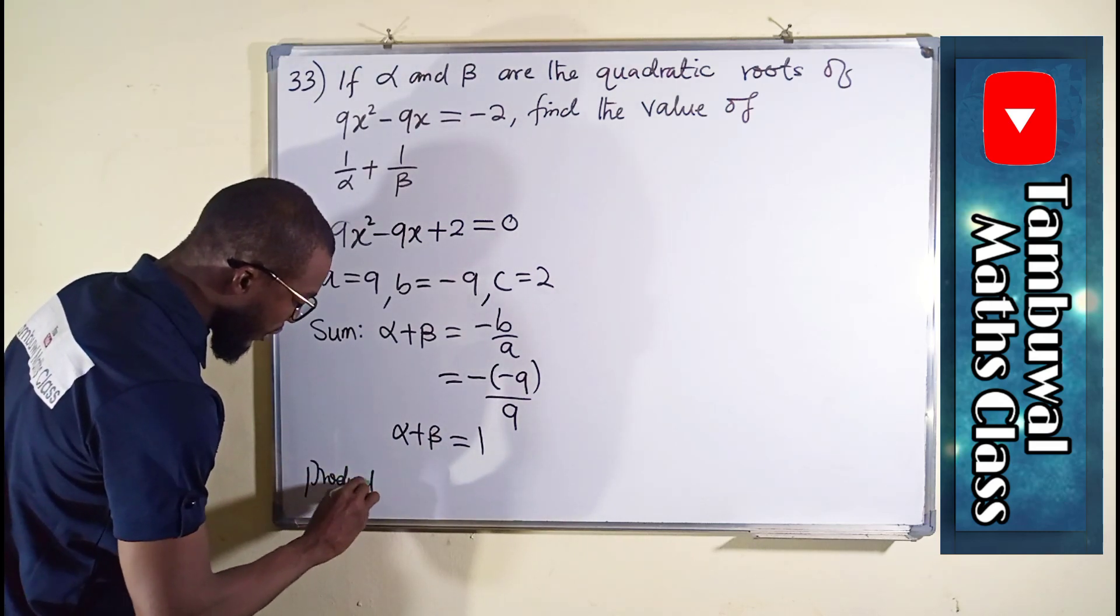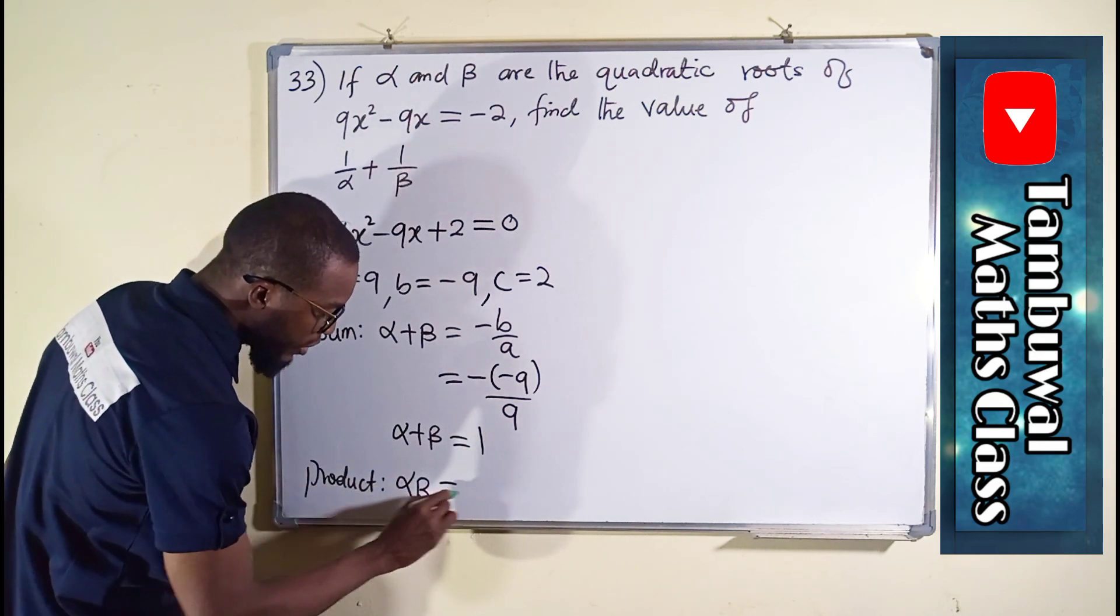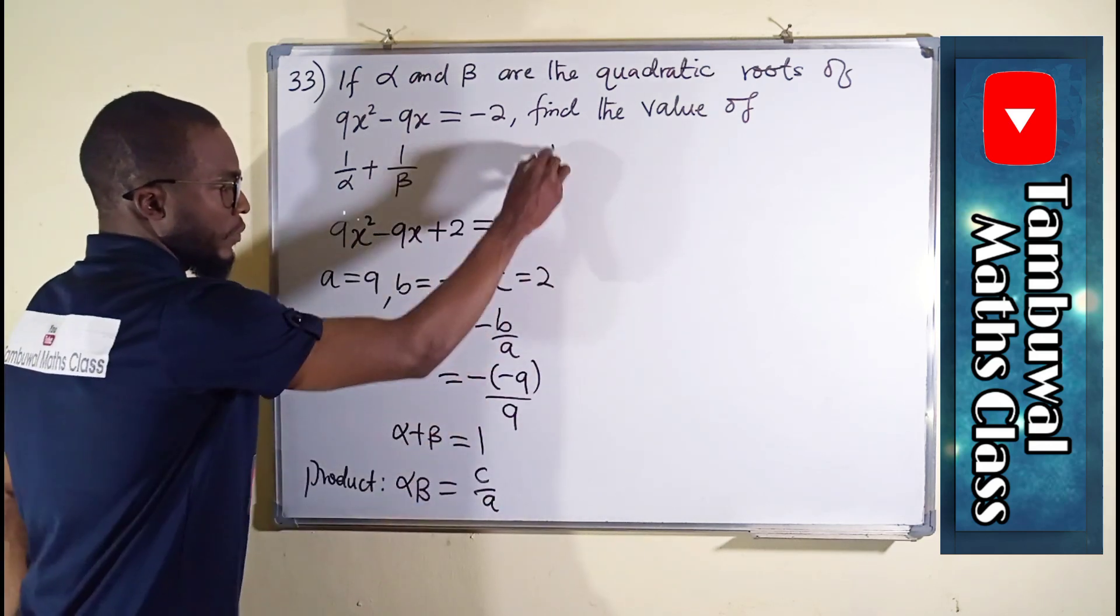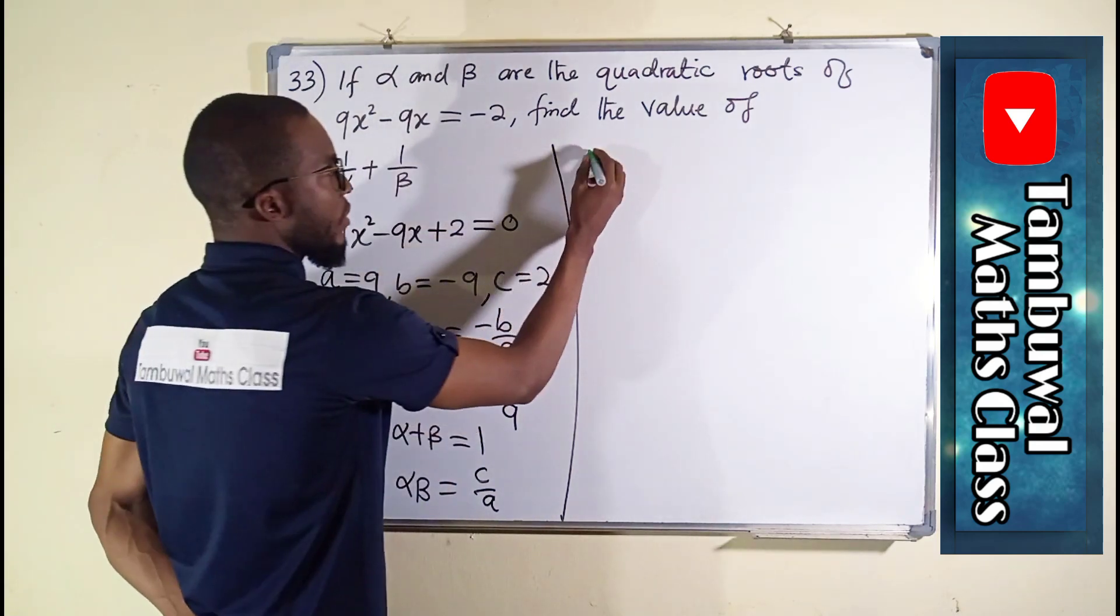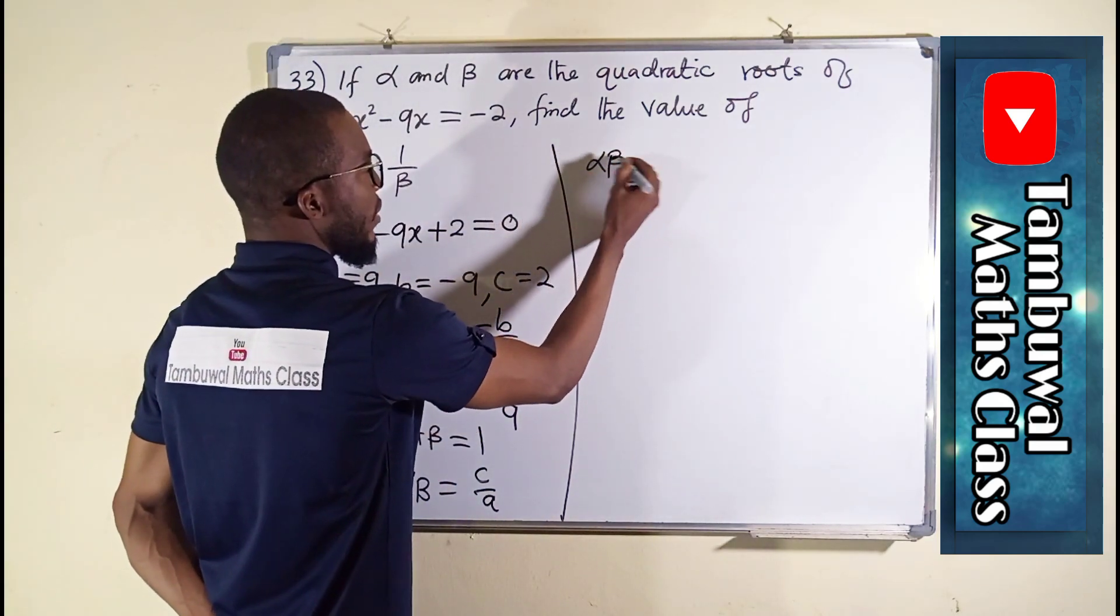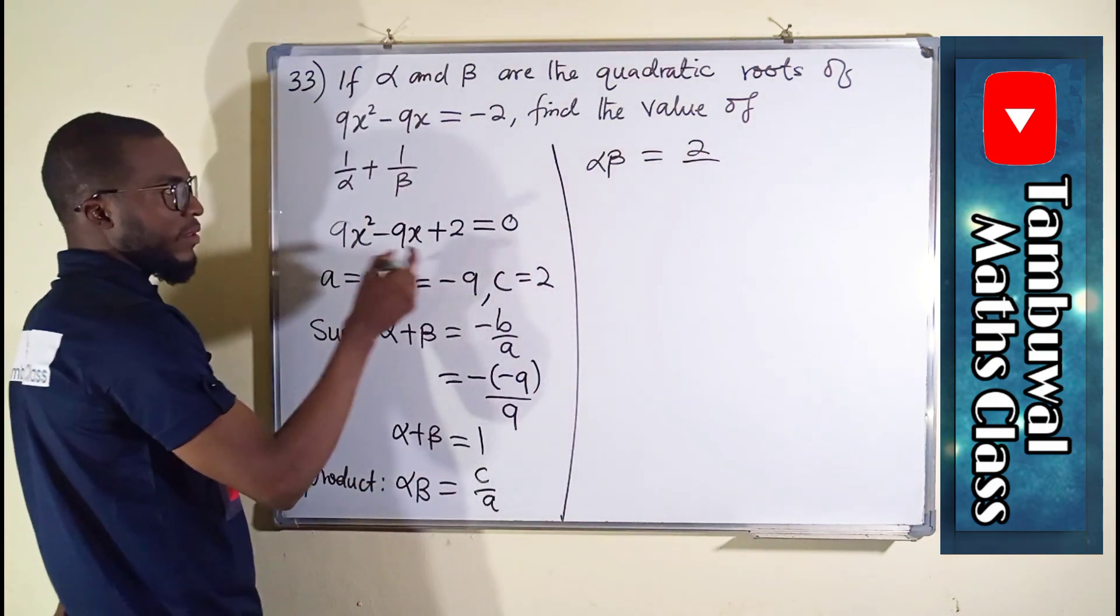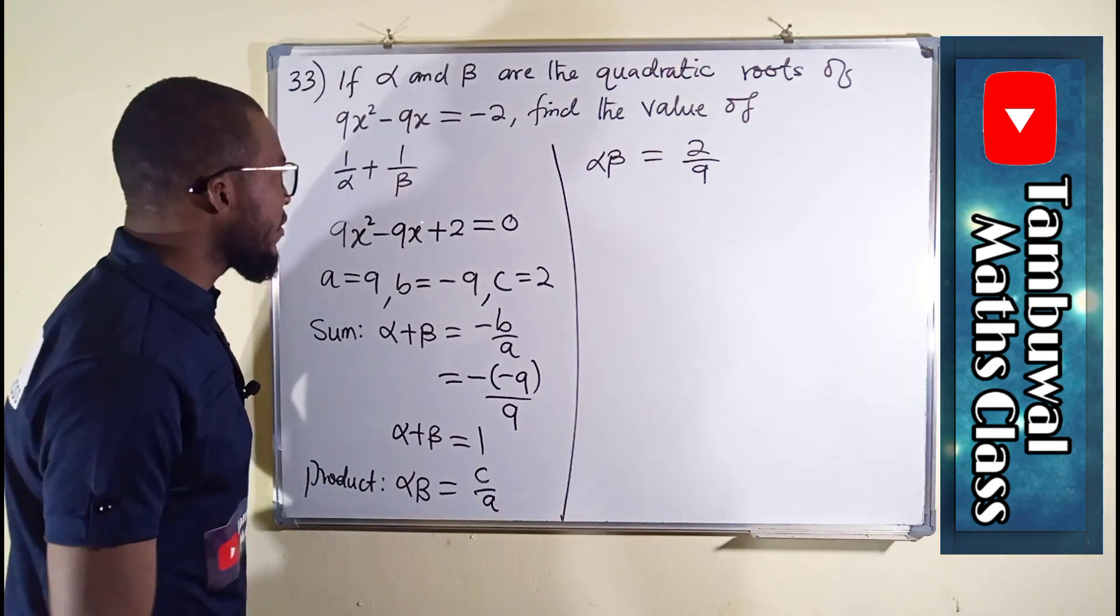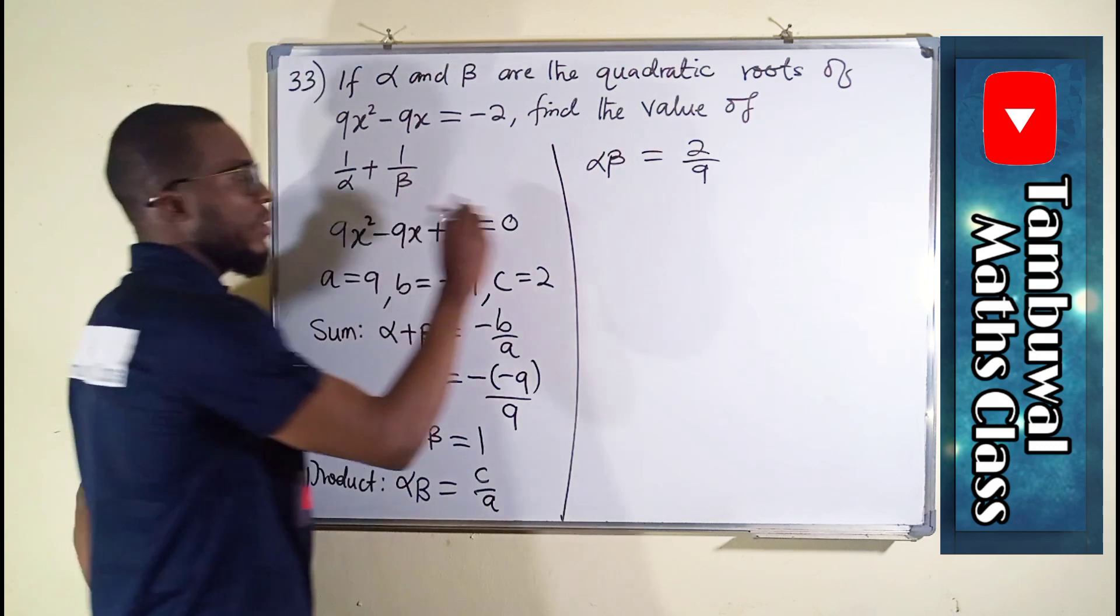Therefore, the product means we should multiply them together. Alpha times beta can be obtained by taking C over A, and our C is constant. You can see it here as 2. So alpha times beta will be equal to 2 over A. Our A is 9.